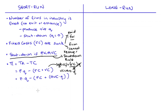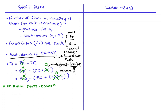Let's see what happens when the firm shuts down and produces zero units (Q = 0). There's no variable cost component since VC = AVC × Q and Q = 0, so variable cost is zero. There's also no total revenue since TR = P × Q and Q = 0. But we still have fixed costs, which are sunk. So profit when shutting down equals negative fixed costs (−FC).